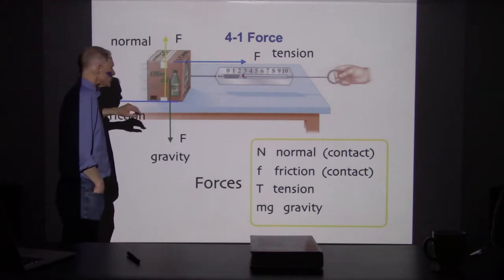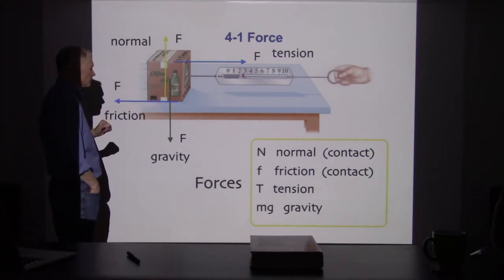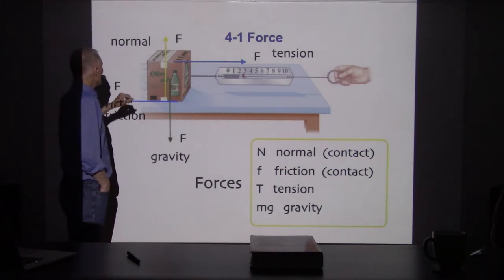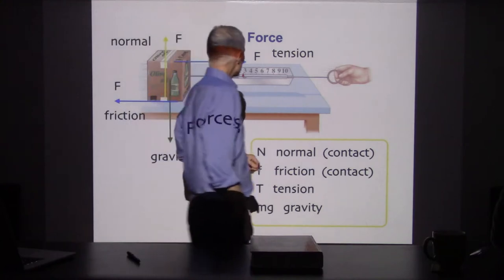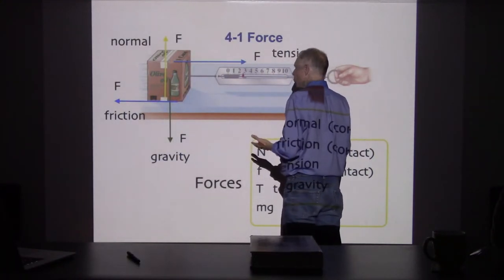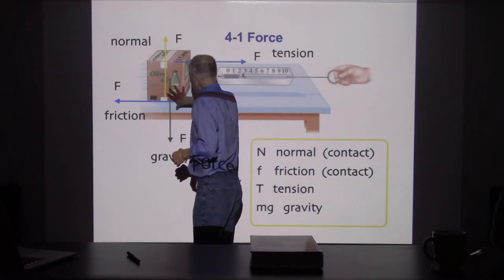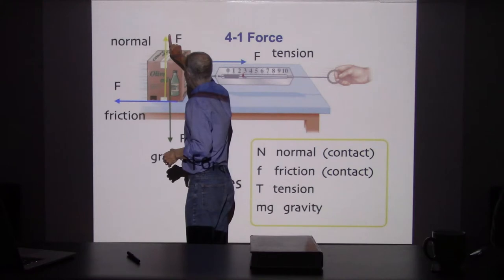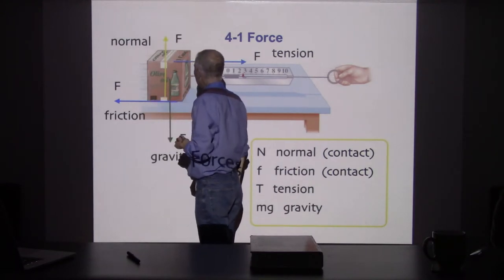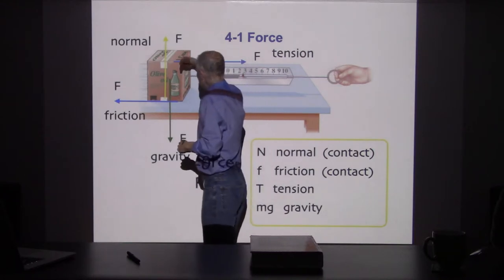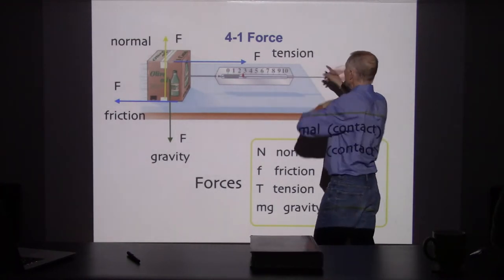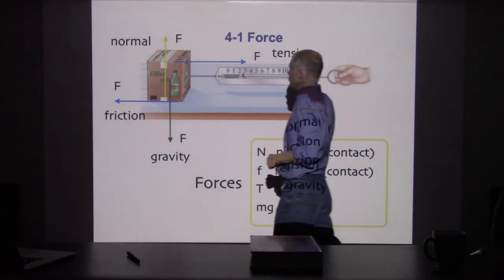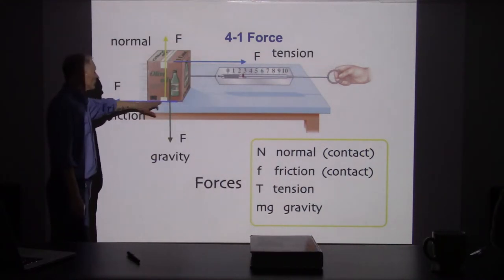Now we don't have a shopping cart in this picture — instead what we have is a box of olive oil, which is also pretty useful. We've got the same set of forces: the olive oil sitting on a surface, so there's a contact force pushing up, a gravitational force pulling down, we're pulling with a tension in a string, and there are frictional forces along the surface.